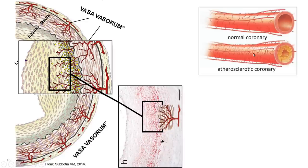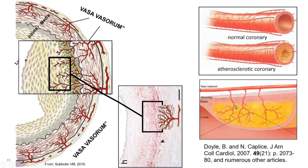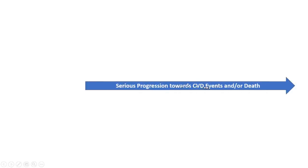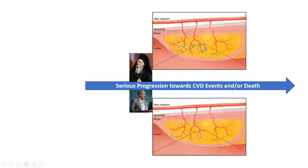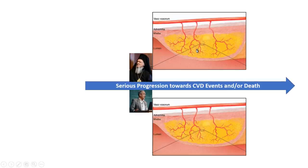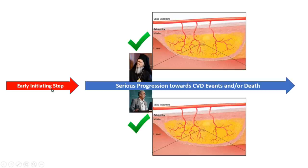Atherosclerotic coronary arteries in many publications have way more vasovasorum that penetrate all the way in — a classic artifact of atherosclerosis — while normal arteries have relatively few that don't penetrate. In serious progression toward coronary events, both Subotin and orthodoxy acknowledge vasovasorum outside-in are an enormous part of progression. They disagree only on the early initiating step: orthodoxy says LDL from the lumen makes its way to the endothelium, then jumps to build up at the base of the intima.